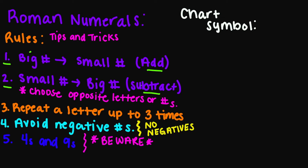Always remember when you are subtracting, choose the opposite letters or numbers depending on the question you are answering. Rule number three: repeat a letter up to three times. Tip number four: avoid negative numbers. Tip number five: beware of any digits with fours and nines in them, because those are the numbers that will usually have a subtraction problem, which means you will most likely need to find the opposite letter or use the opposite number.